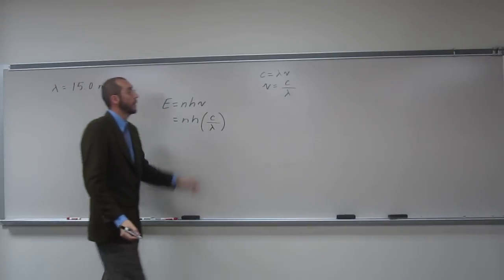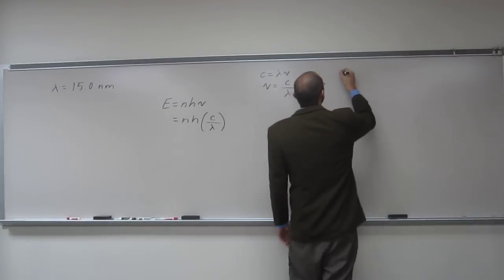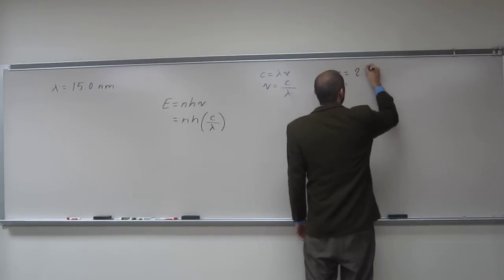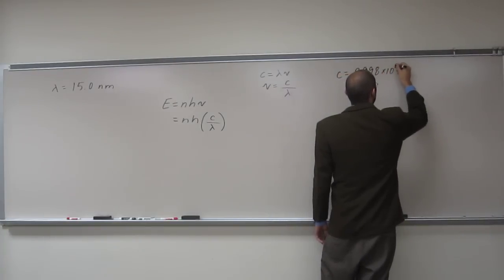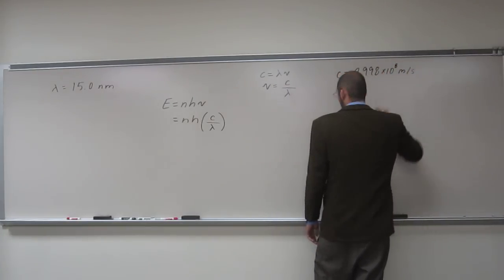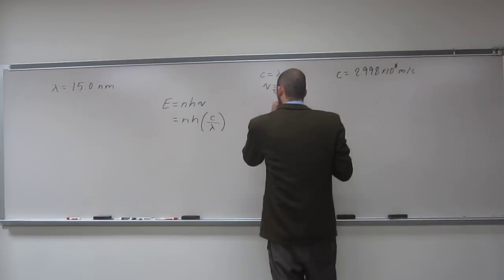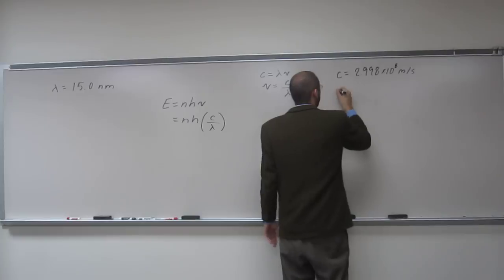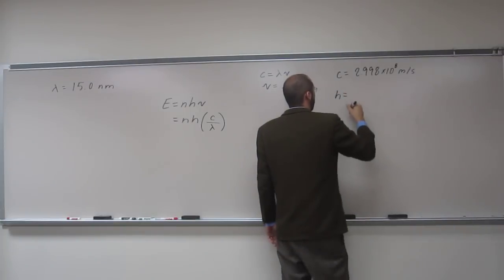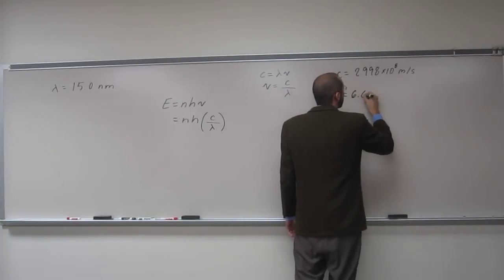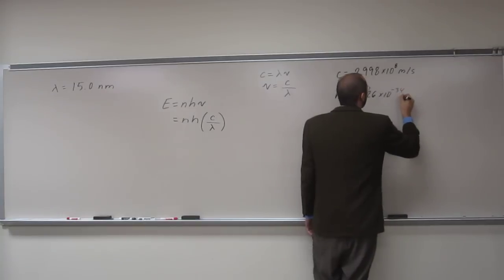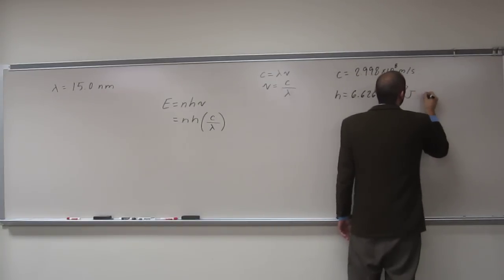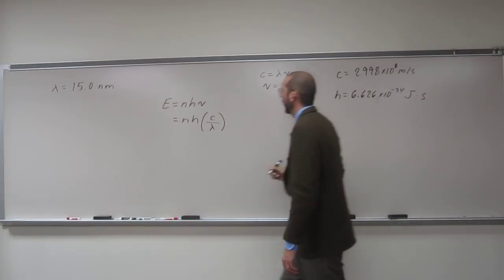H and c are constants given to you. So c is 2.998 times 10 to the 8 meters per second, and h is Planck's constant, so this would be 6.626 times 10 to the negative 34th joules seconds.